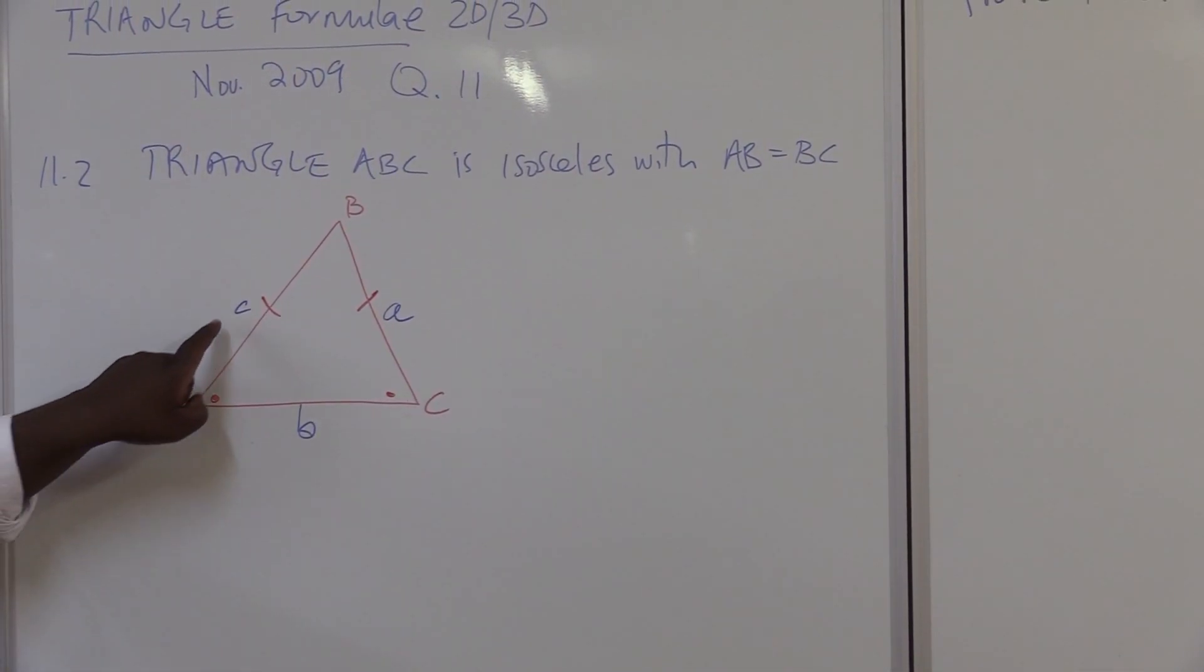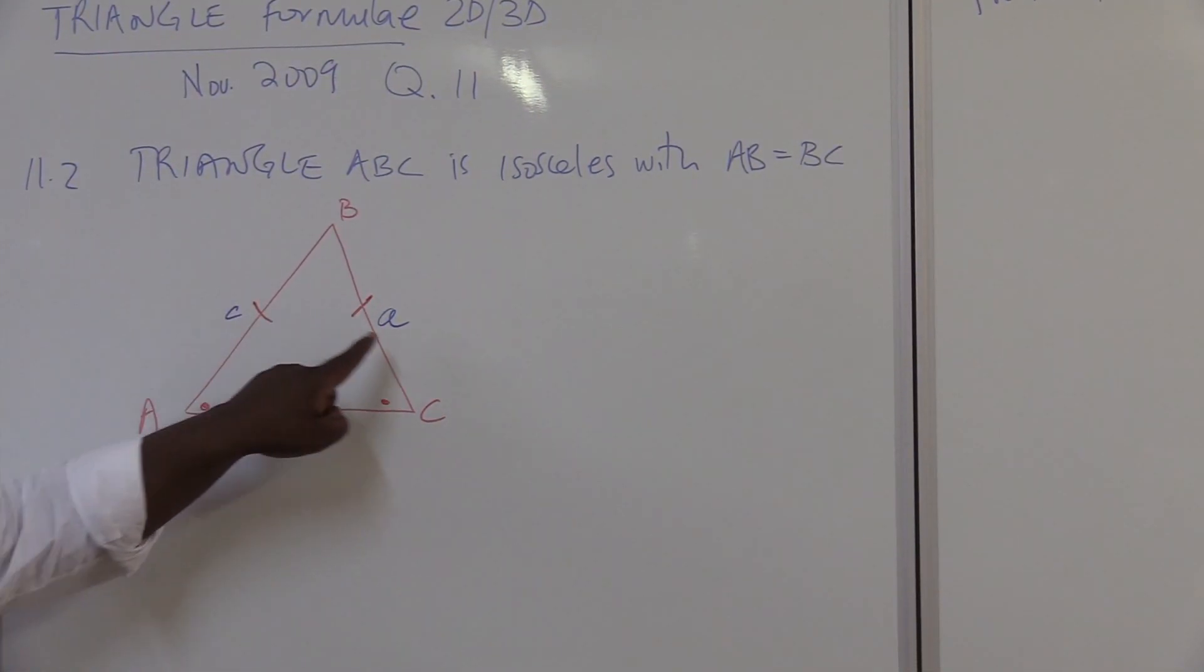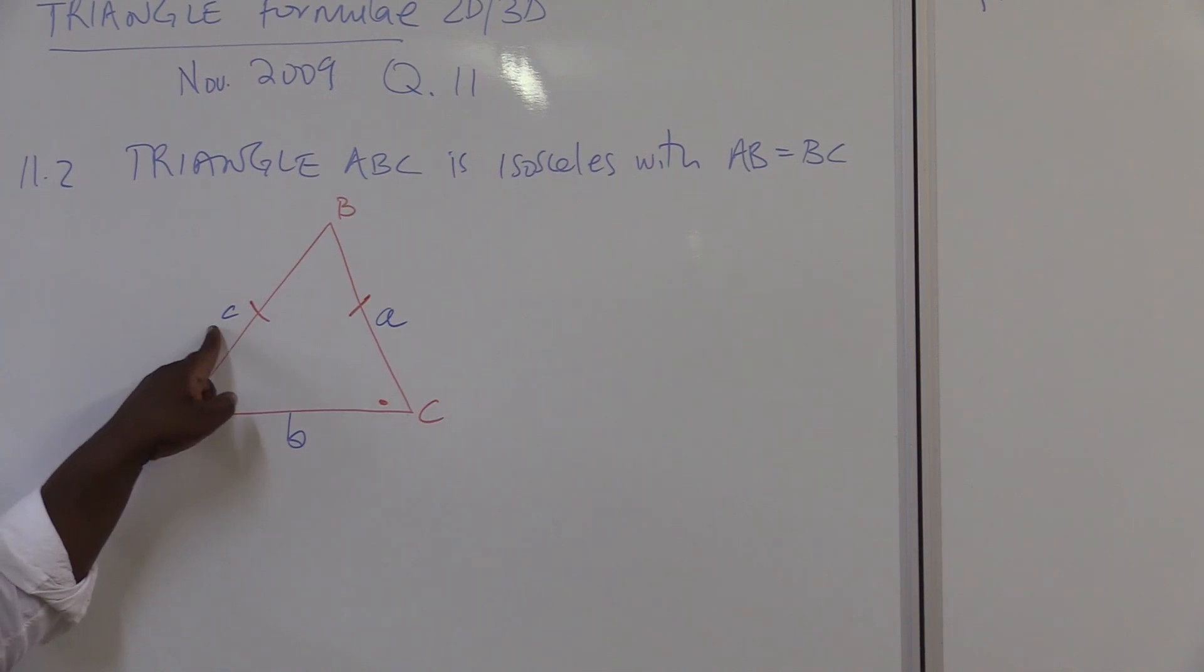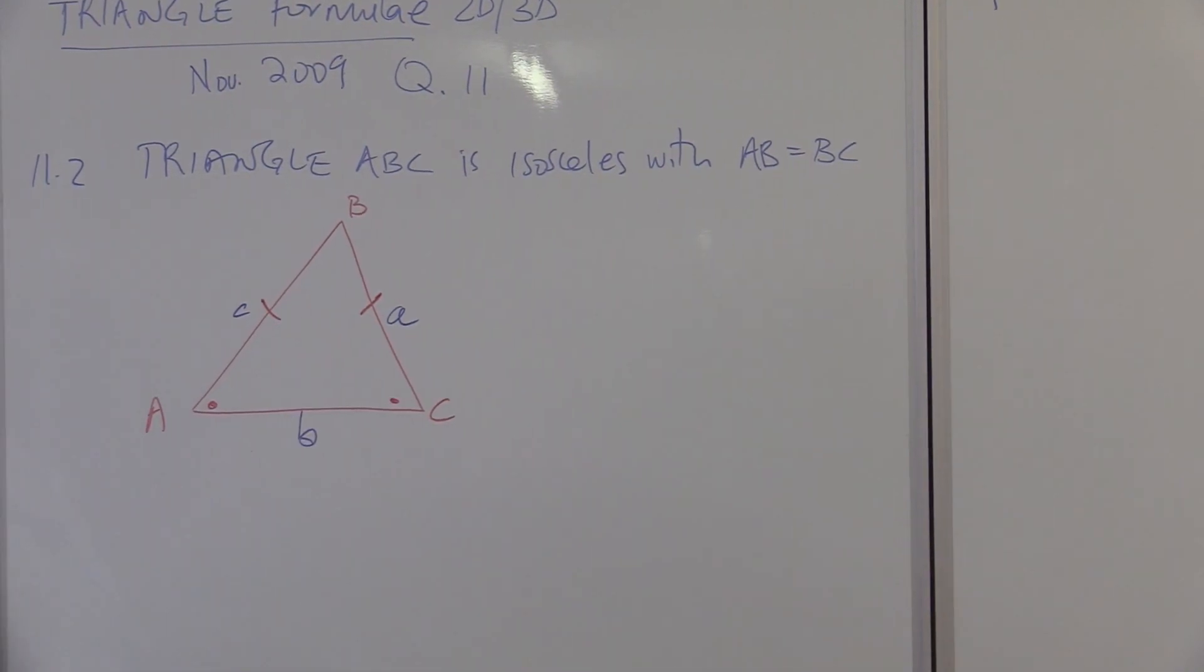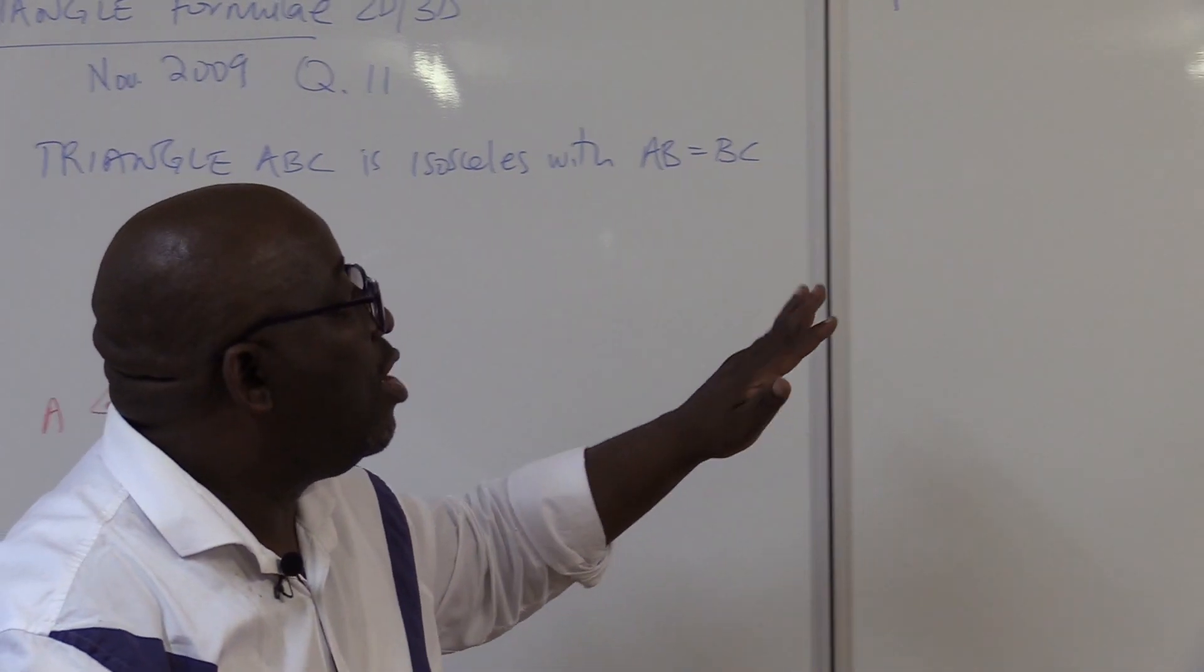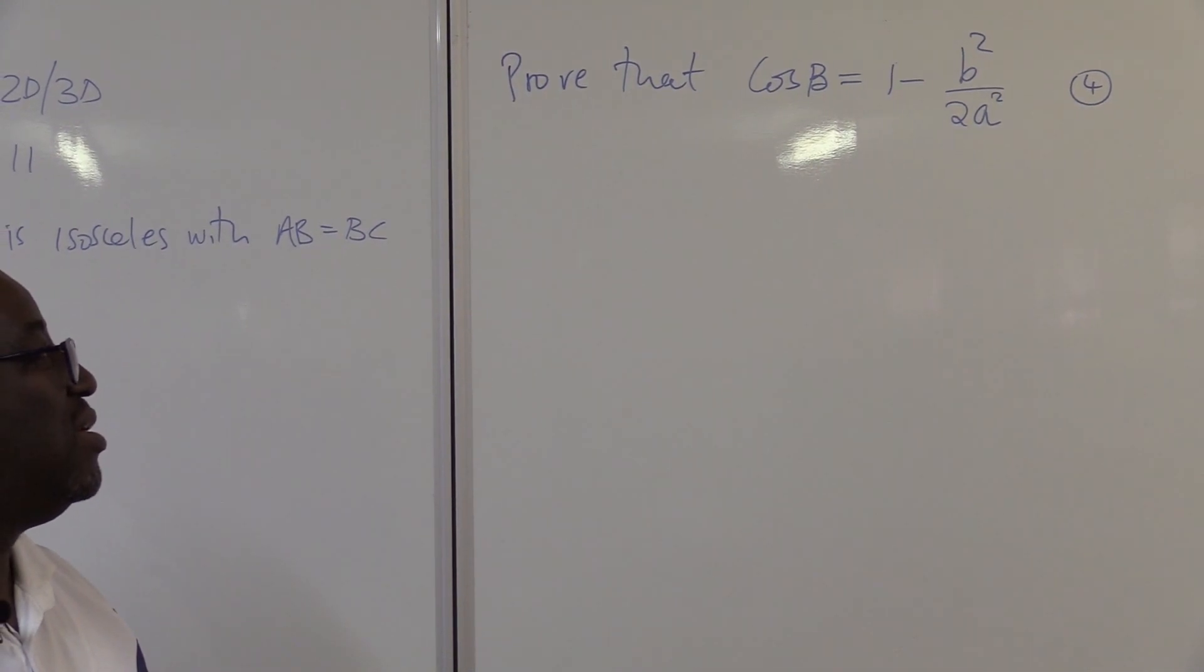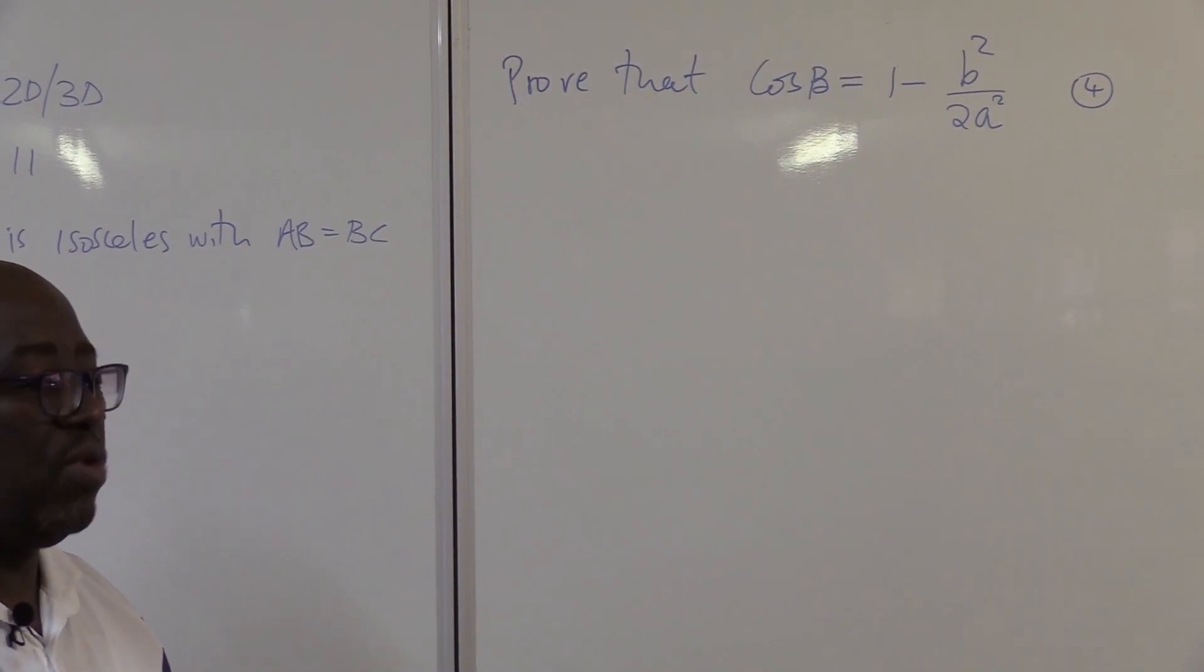That's what we're given. If we say this side is equal to this side, I can write C here because these two sides are the same, or I can write A here because these two sides are the same. That's what it implies. But what is the question required us to do? Prove that cos B is equals to 1 minus B squared all over 2A squared.